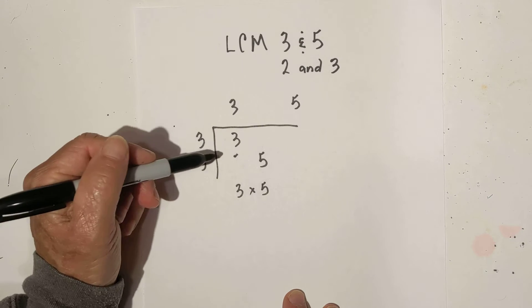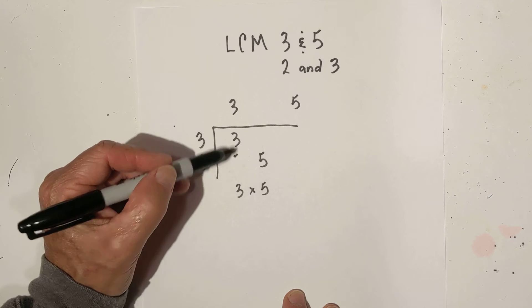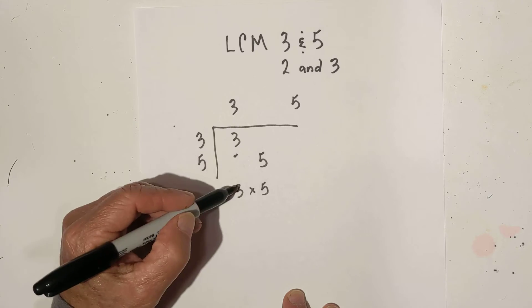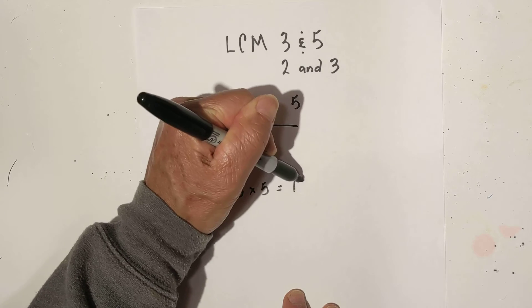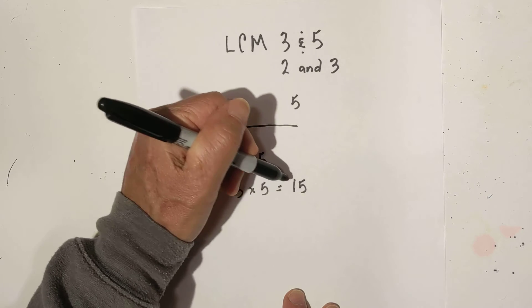Now normally you may have different factors in here, and if you had two numbers then you would only bring down one. But since we only have these numbers, you just multiply them together, and the lowest common multiple of 3 and 5 is 15.